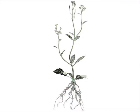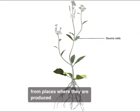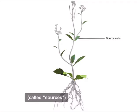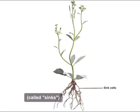The phloem system transports sugars from places where they are produced, called sources, to places where they are consumed or stored, called sinks.